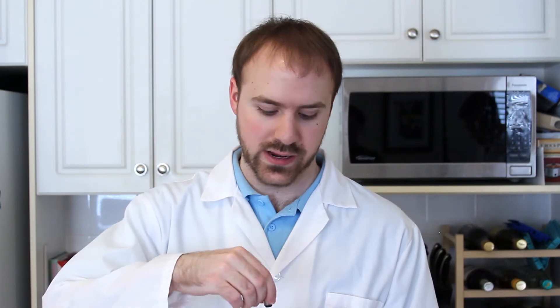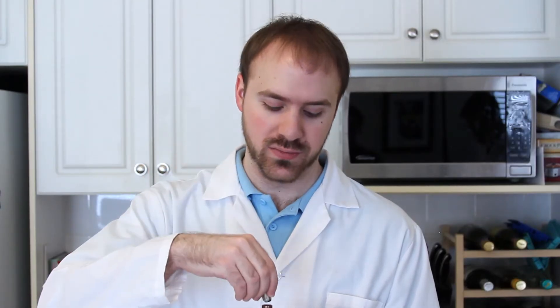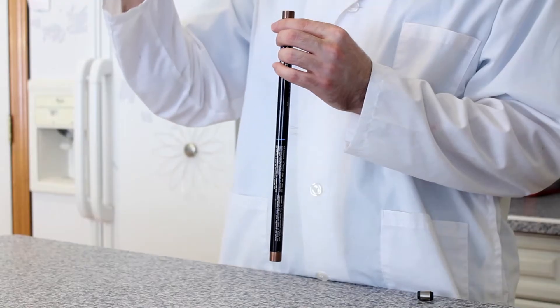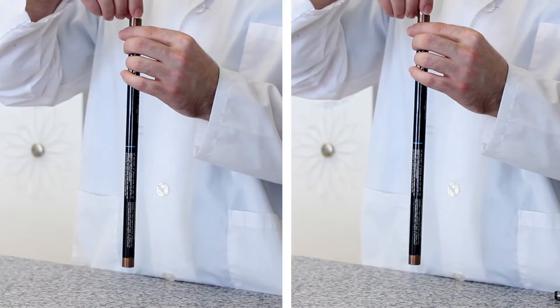Next, take your non-magnetized piece of metal and drop it down the tube to see how long it takes. Then, take your magnet and drop it down the tube and see how long it takes. Let's look at those two clips side-by-side and compare the drop rates.